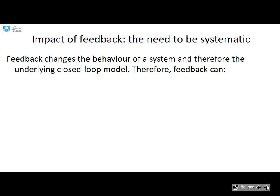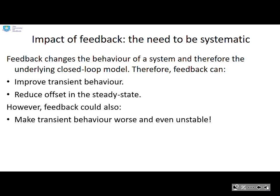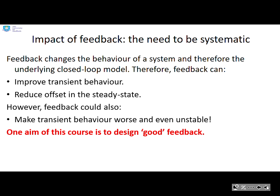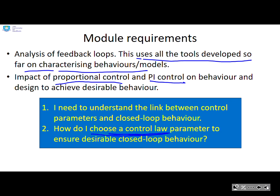The impact of feedback: we need to be systematic. Feedback changes the behaviour and therefore the underlying closed loop model. Feedback can improve transient behaviour and reduce offset in the steady state, making the target what we actually want. However, feedback could also make transient behaviour worse or even unstable. A key aim of this course is to design good feedback. We need to be able to analyse feedback loops — using all the tools developed so far — and we will look at proportional control and PI control, the most common techniques used in industry, understanding the link between control parameters and the resulting closed loop behaviour.